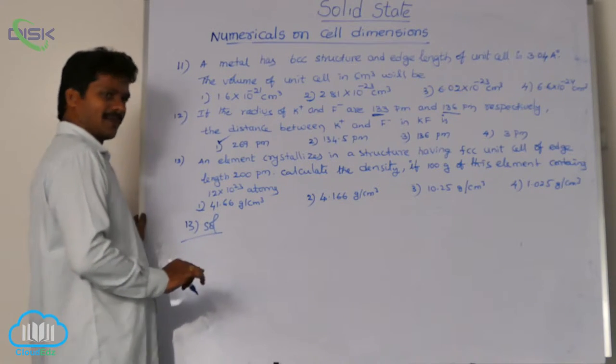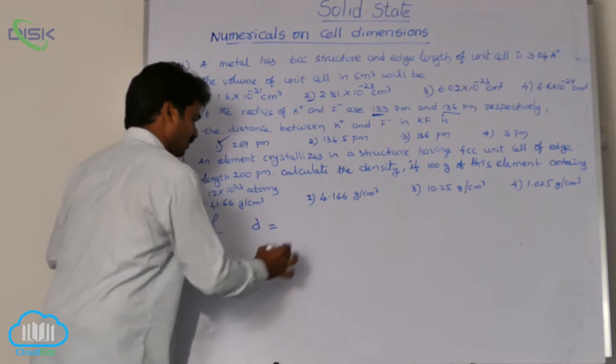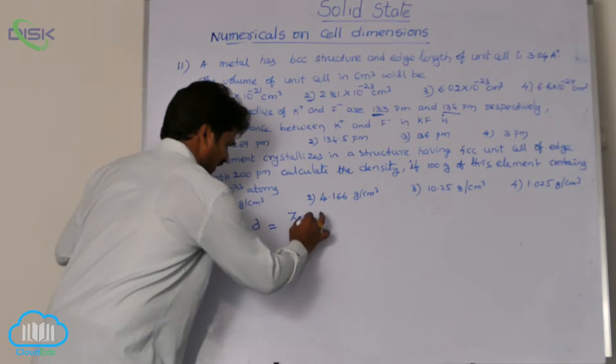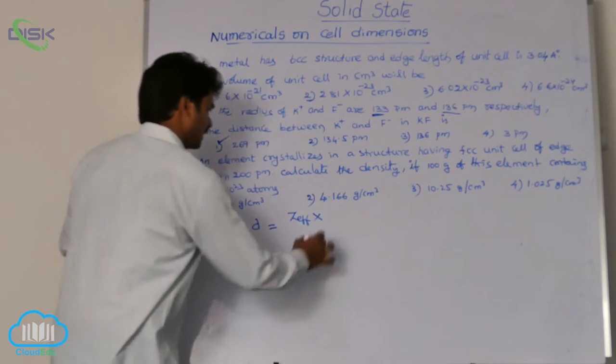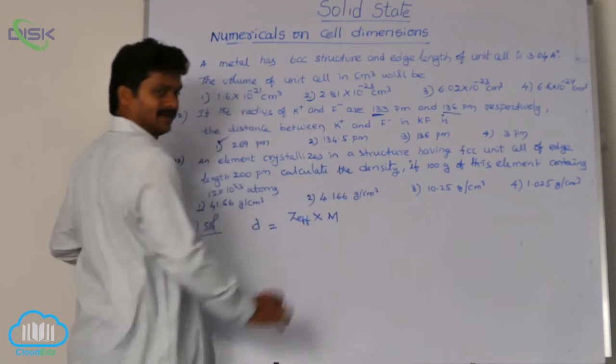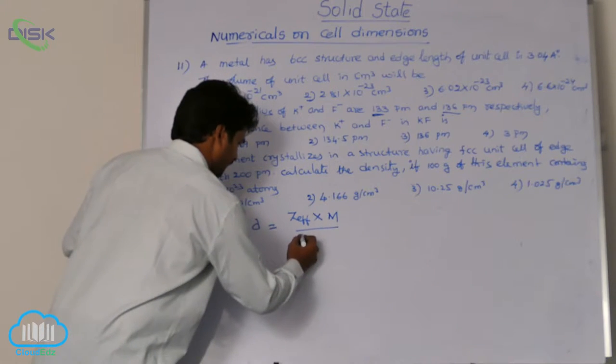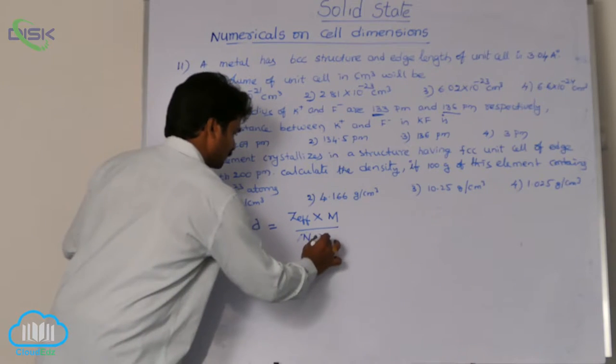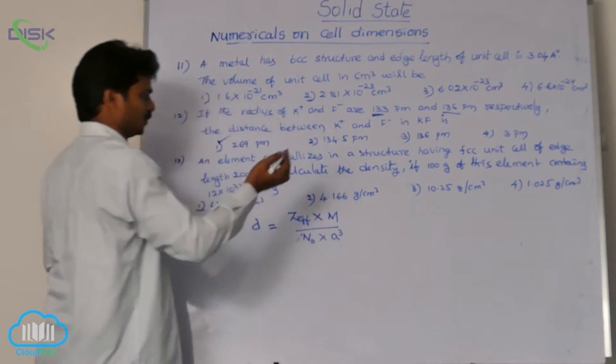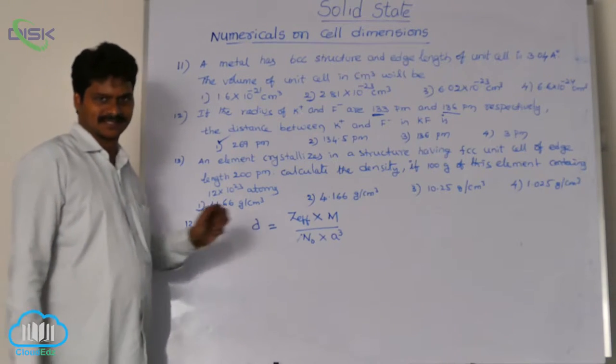What is density formula? We have a formula: density is equal to number of effective atoms per unit cell into molar mass of the given metal or compound divided by Avogadro number N naught into volume of unit cell, that means A cube. This is the formula for any system, any cubic system.